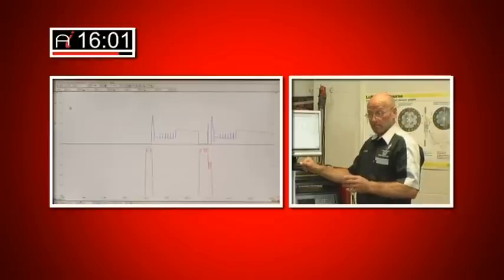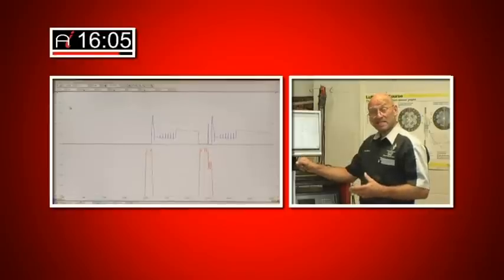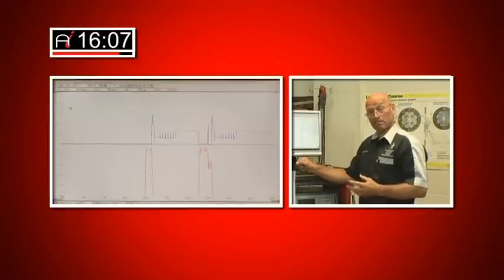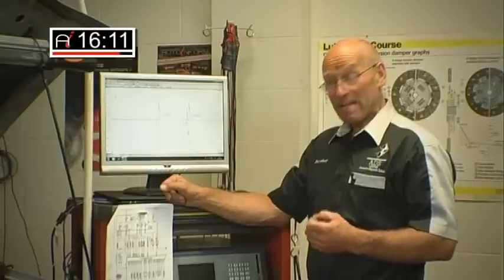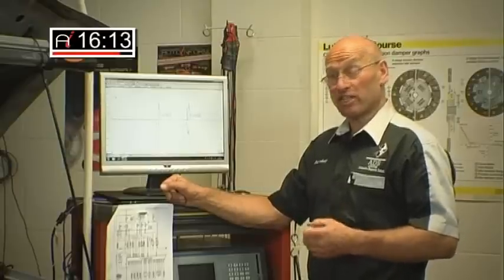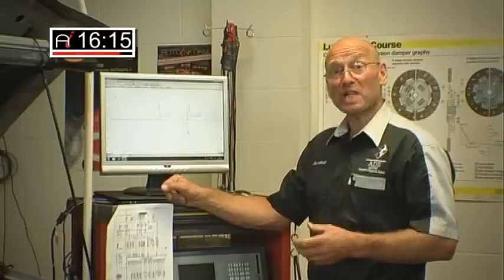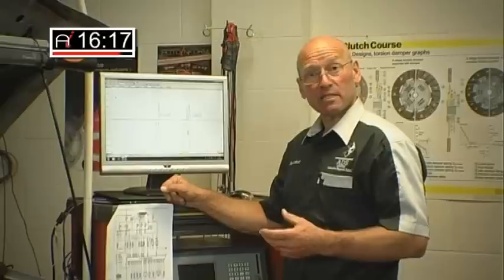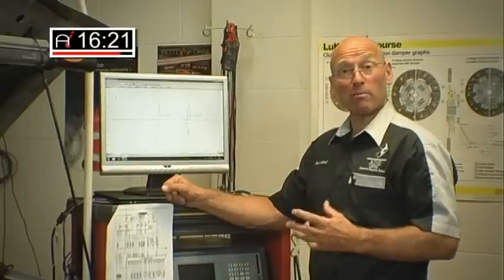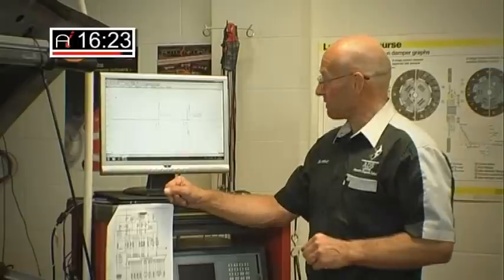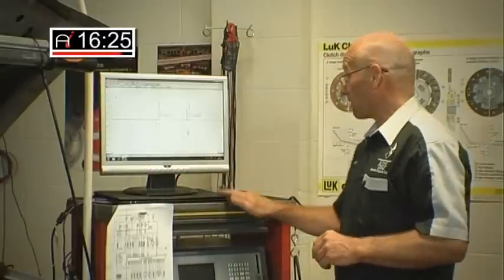This is a fairly old system where there are two events only for fueling. On the very latest common rail systems, there can be up to eight events now, where you will have eight fuel injection events per power cycle on the very latest injection systems. This, as I say, just has two events, which is quite common for this variation of system. So we can switch the vehicle off now.